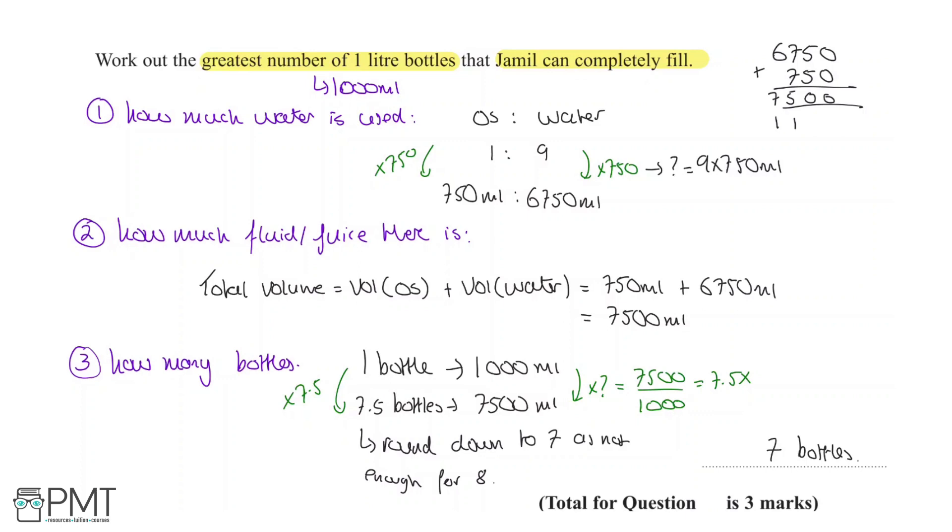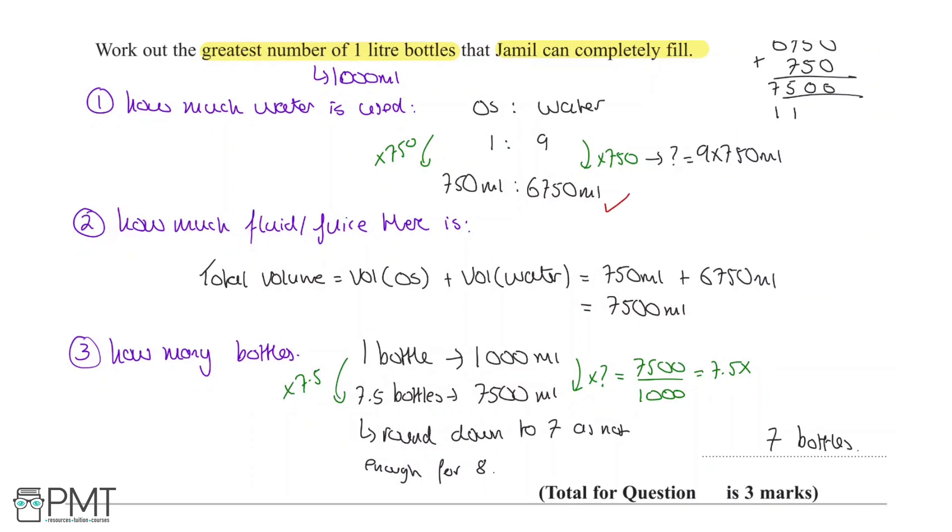This question is worth three marks. The first mark comes from finding how much water is needed. The second mark comes from calculating the total volume, which is 7,500 millilitres. And the third and final mark comes from getting the number of bottles being 7.